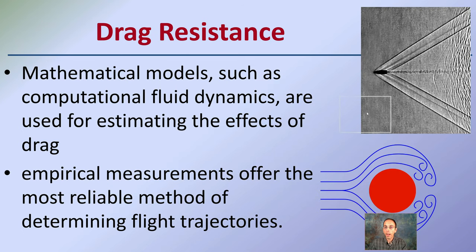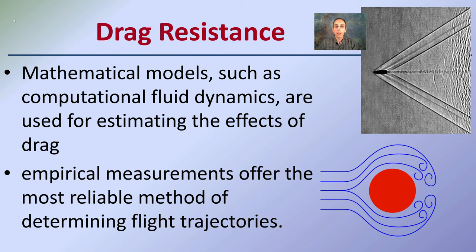We also have drag resistance. Mathematical models such as computational fluid dynamics are used for estimating the effects of drag, and this can get very complicated. Empirical measures often offer the most reliable method of determining flight trajectories. The drag on a particular bullet needs to be taken into consideration because it is a factor influencing where that bullet ultimately impacts the target.